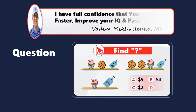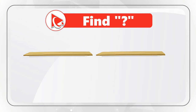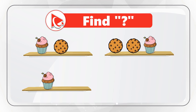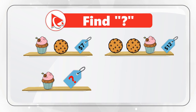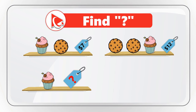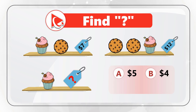Here's a question that seems unsolvable, but with one correct assumption it's easy. You're presented with a coffee shop shelf with cupcakes and cookies. The first set — one cookie and one cupcake — costs $7. The second set — two cookies and one cupcake — costs $12. The last set is only one cupcake. Calculate the price from: Choice A: $5, Choice B: $4, Choice C: $2, Choice D: $3.